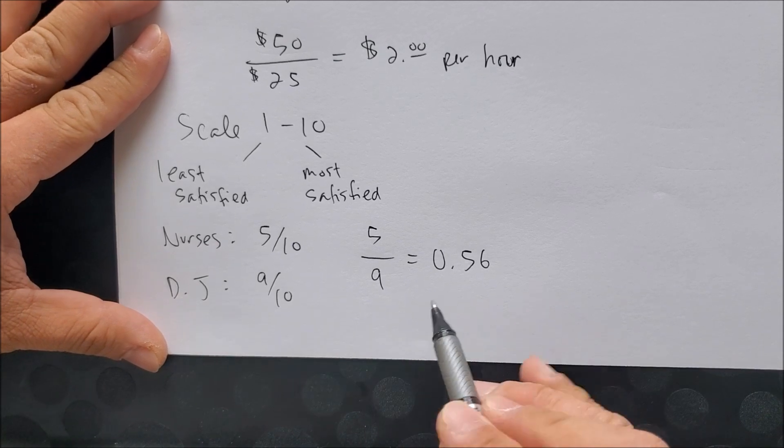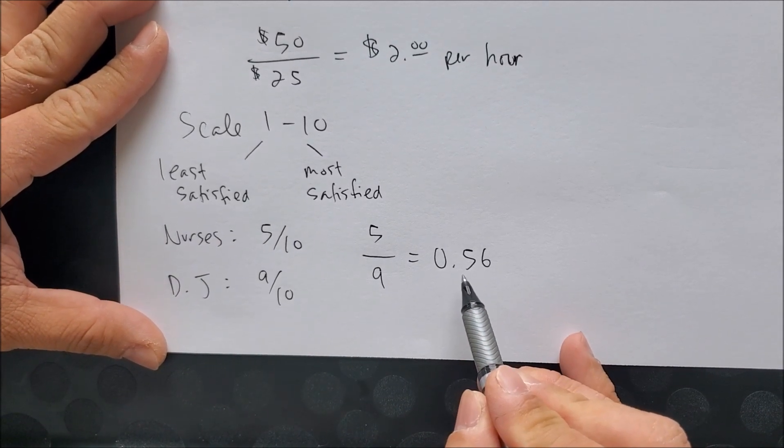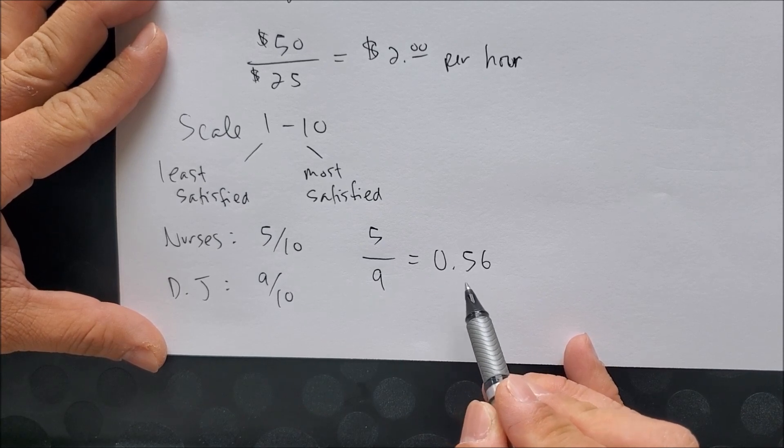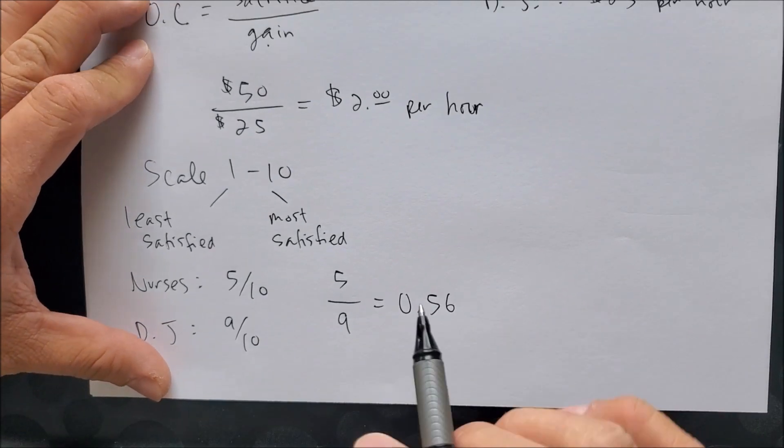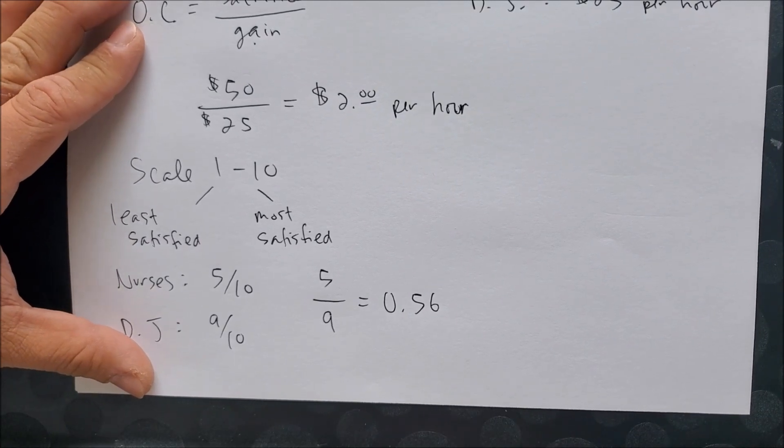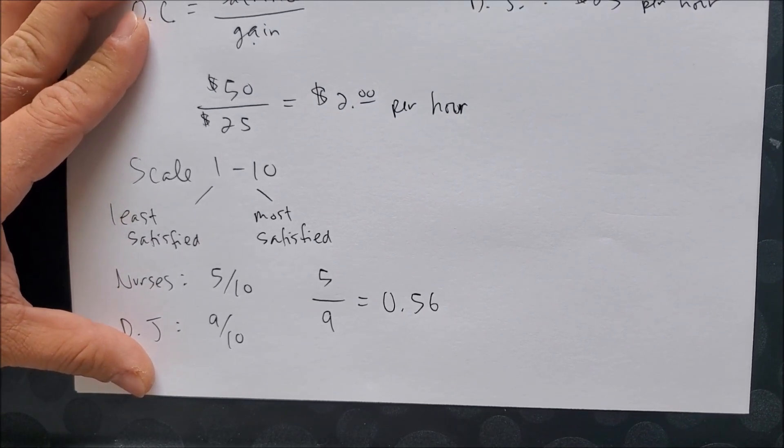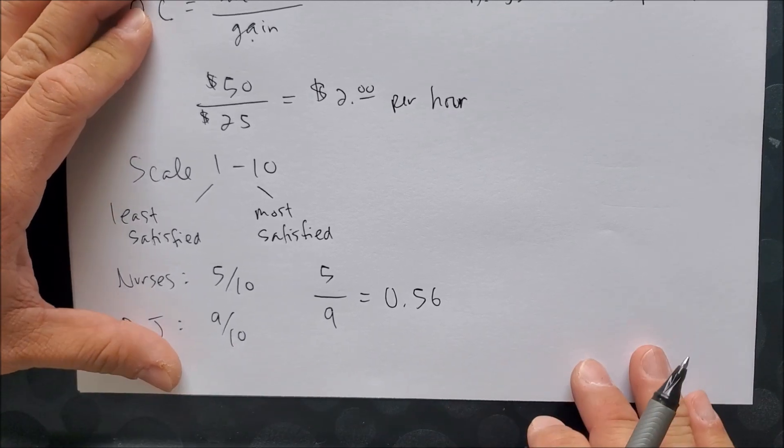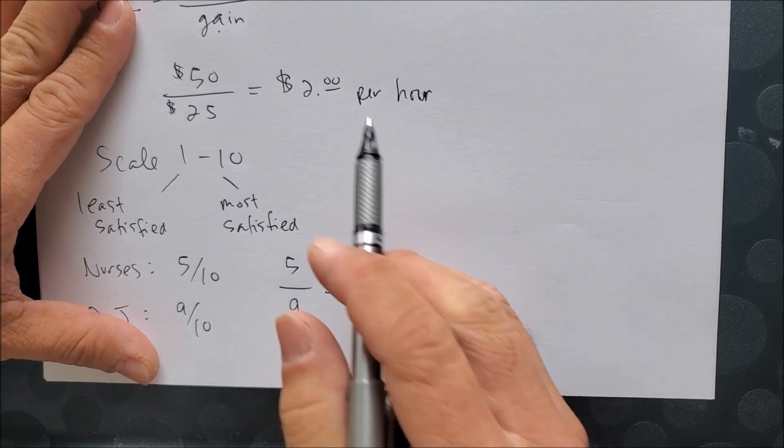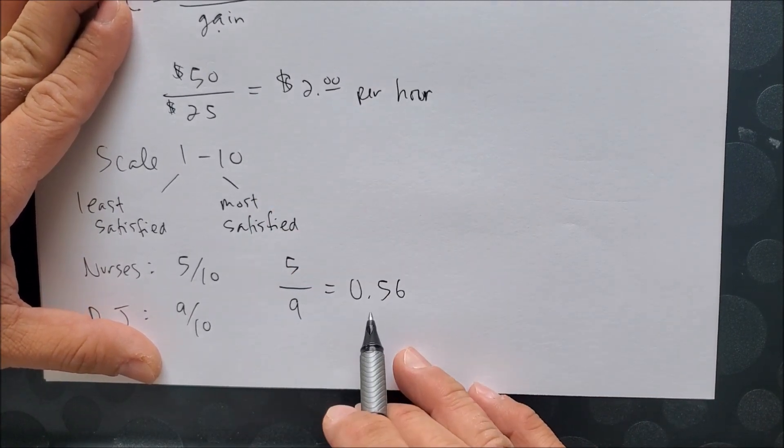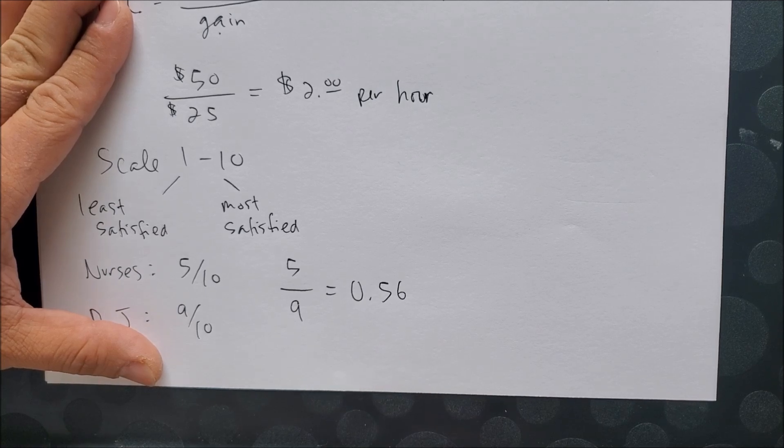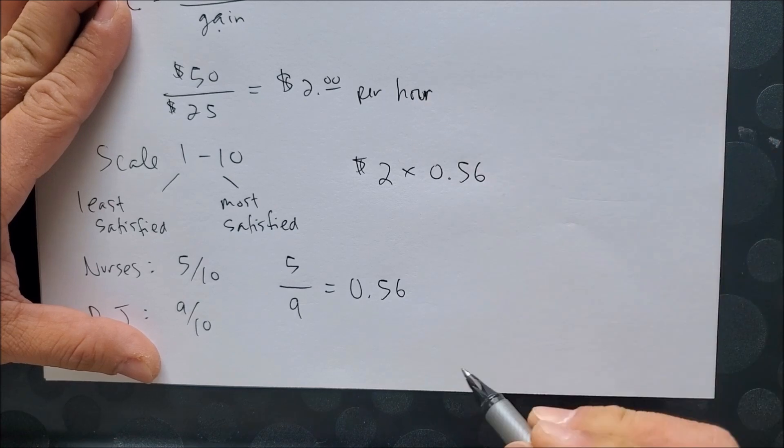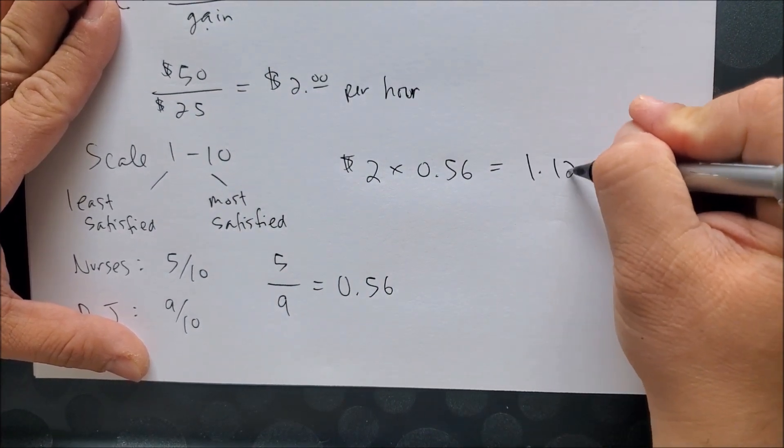Now what this says is for every unit you gain as a DJ, you could be gaining 0.56 as a nurse. But is this enough to make someone decide to stick to DJing or switch careers and become a nurse? Now we have two numbers we can use: $2 and 0.56. If we multiply $2 times 0.56, this gives us 1.12.